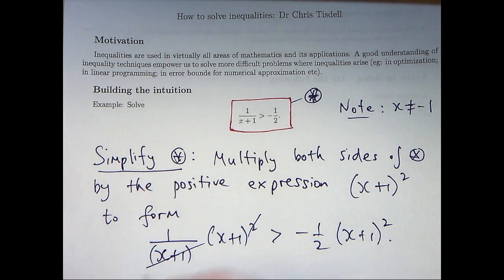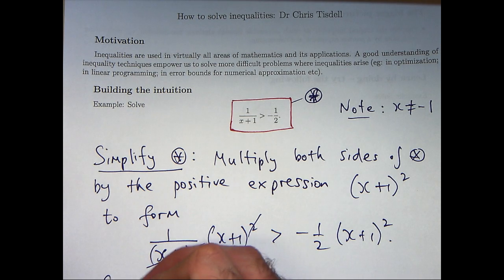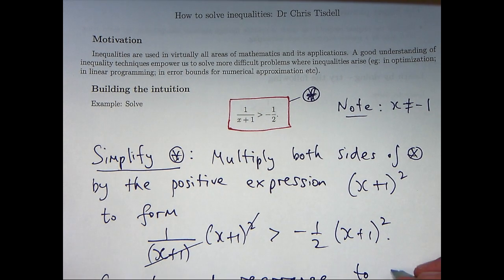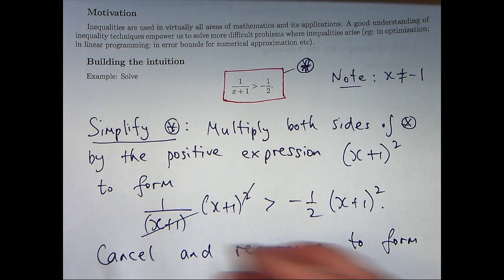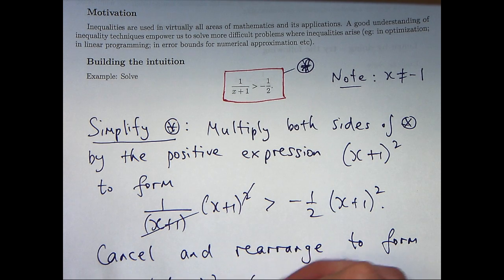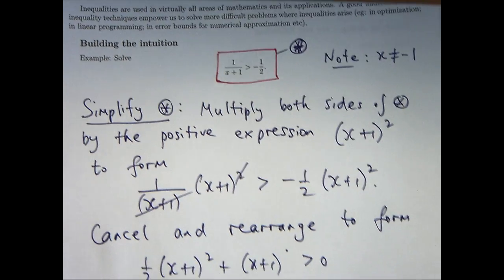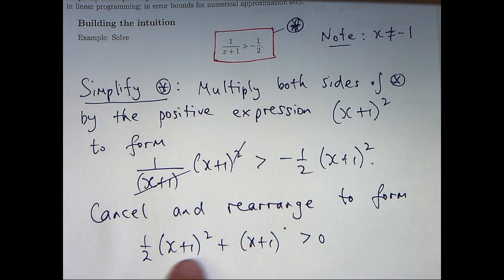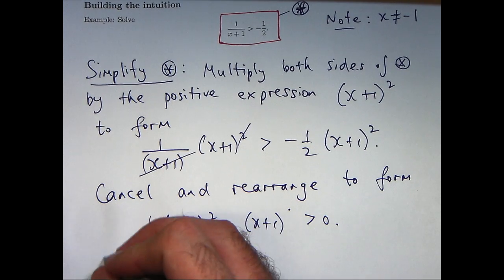Okay, so we can cancel, cancel and rearrange. So, let's get all the x's on one side. Bring that over to the other side. Alright, so now we can still simplify this left hand side. We've got a common factor of x plus 1, so let's take that out.